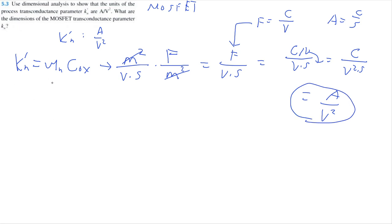Now what are the dimensions of the transconductance parameter KN, so just KN not KN prime? Well KN is just equal to KN prime times width divided by length of a MOSFET device.